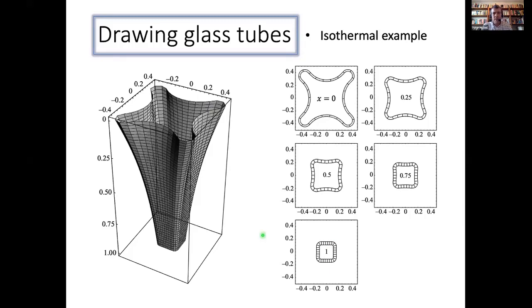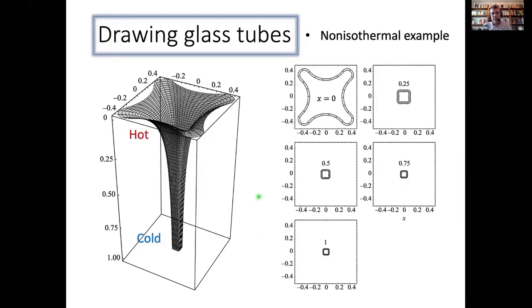So that's an isothermal example. And we did look at including temperature effects as well. So here's an example. We're feeding hot glass at the top and it's cooling as you go down. And the main difference is that all the action happens near the top where the glass is hot and still viscous. And most of the evolution has already happened. In fact, by the time you go between the first two values of X that we looked at.